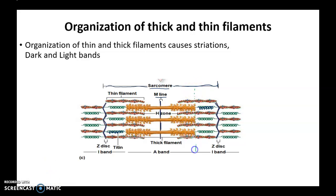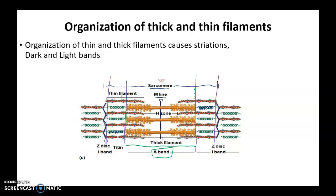Looking at the segment in the middle: the region that contains both thick and thin filaments is called the A-band. On either side, within the purple lines, there are only thin filaments and no thick filaments — that region is called the I-band. So the I-band has only thin filaments.